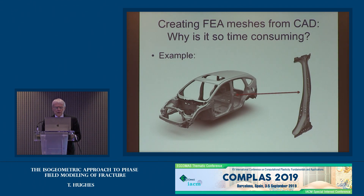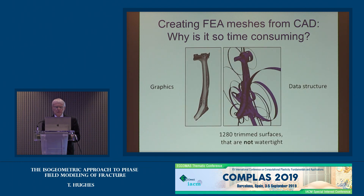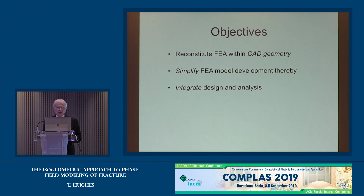Why is it so difficult to create finite element meshes from CAD? If you take a simple example like the B-pillar of a Honda — just one pressed piece of metal — what you're seeing is computer graphics: a trimmed CAD file. If you look at the untrimmed CAD file, it consists of 1,280 rectangular patches. They overlap, they intersect, but those intersections have gaps and they're not watertight. All of that has to be fixed, and all the extraneous material has to be removed.